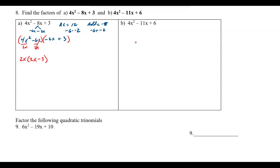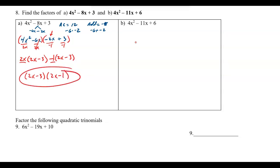For the second group, since it's negative I factor out a negative 1 — there are no common numerical factors. Dividing by negative 1: negative 2x becomes positive 2x, wait — that gives 2x minus 3. Both groups match with 2x minus 3, so I pull that out, leaving 2x and minus 1. Check: 2x times 2x is 4x², then negative 2x minus 6x gives negative 8x, and negative 3 times negative 1 is positive 3. It checks out.